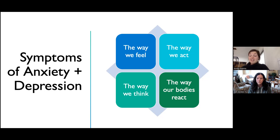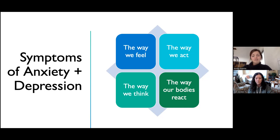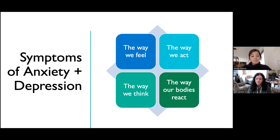The next category is the way we think. This one can be really hard to see but is very prevalent and important to recognize. For depression, this might be confusion, difficulty concentrating, hard to make decisions, loss of motivation, self-blame, or even self-harm thoughts. With anxiety, it might be forgetfulness, being preoccupied, errors in judgment, reduced creativity, or even nightmares — that inability to focus, racing thoughts, those kinds of things.